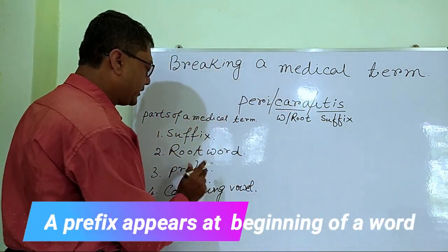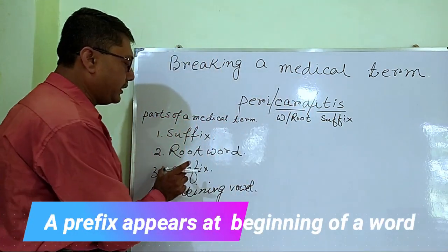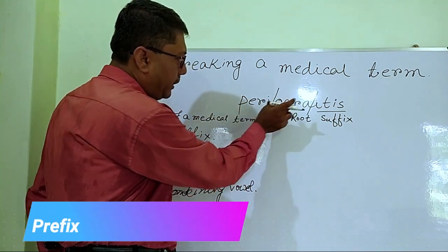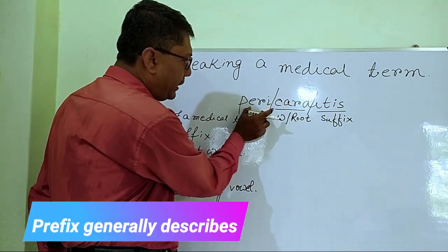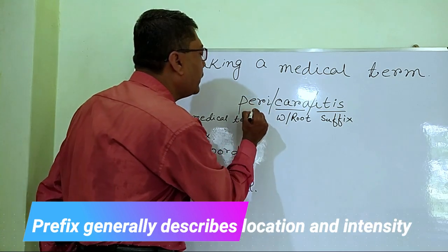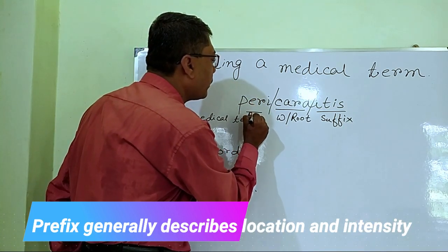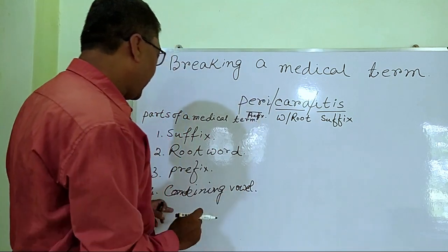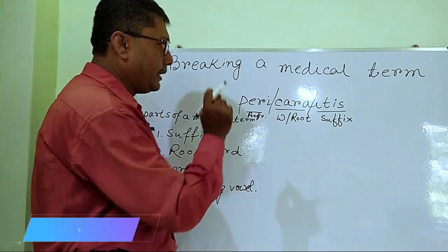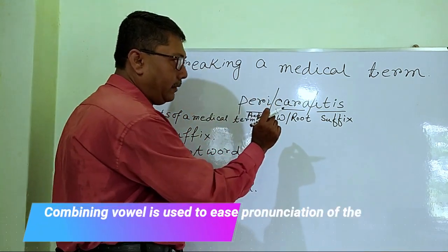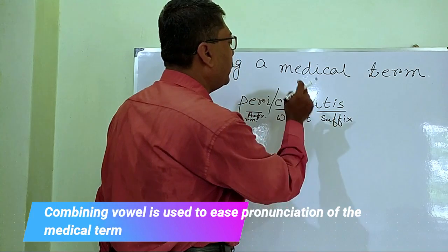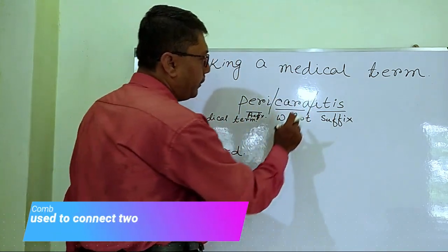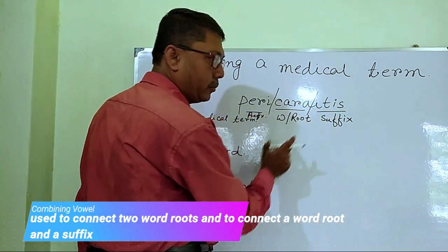Then there is the prefix. 'Pre' means before, and 'fix' means fixation — we are fixing this part before the root word, so it is called a prefix. The combining vowel is not always present; it generally appears between the suffix and the word root.